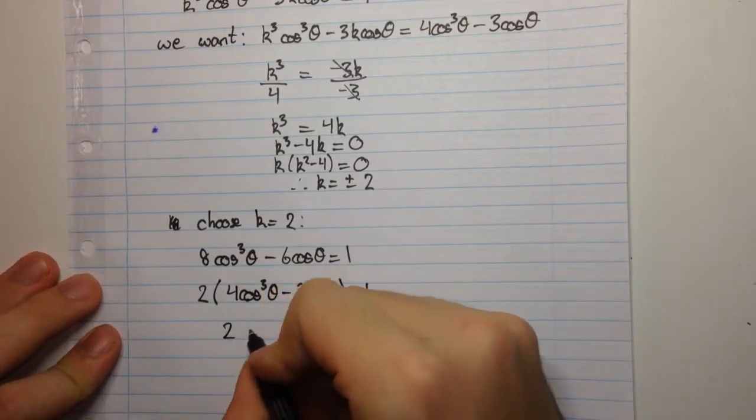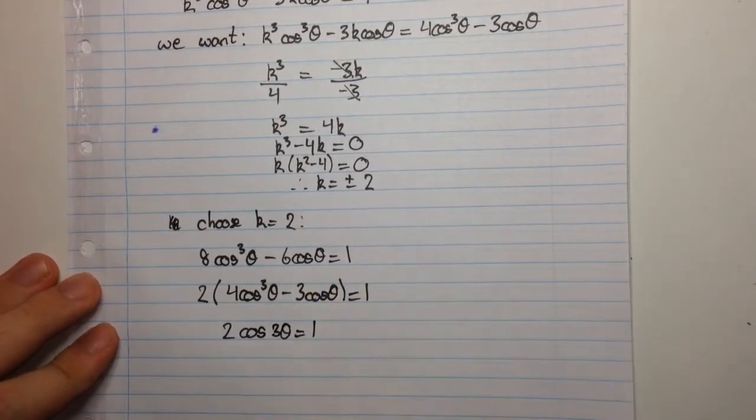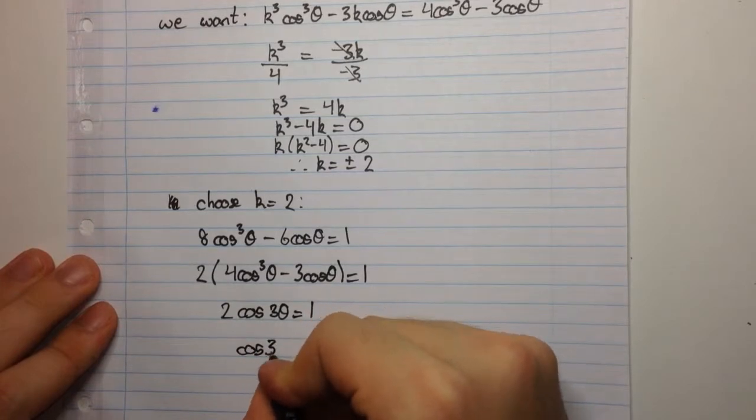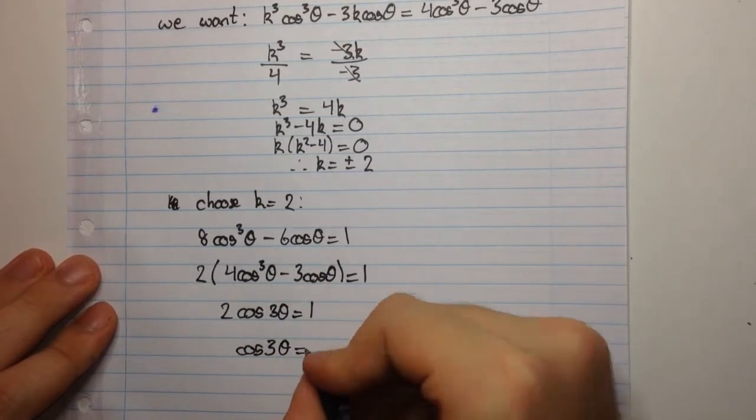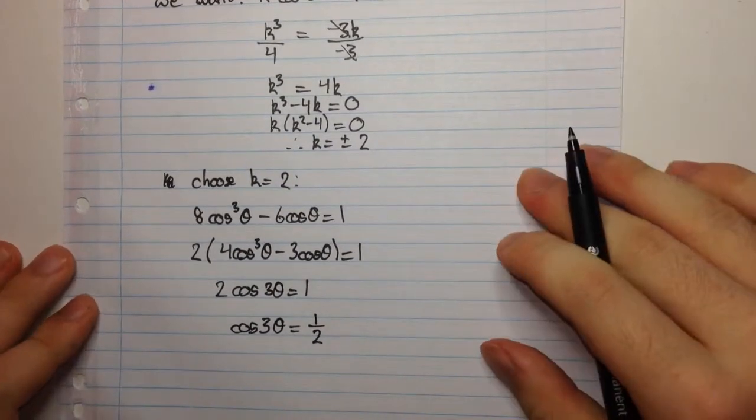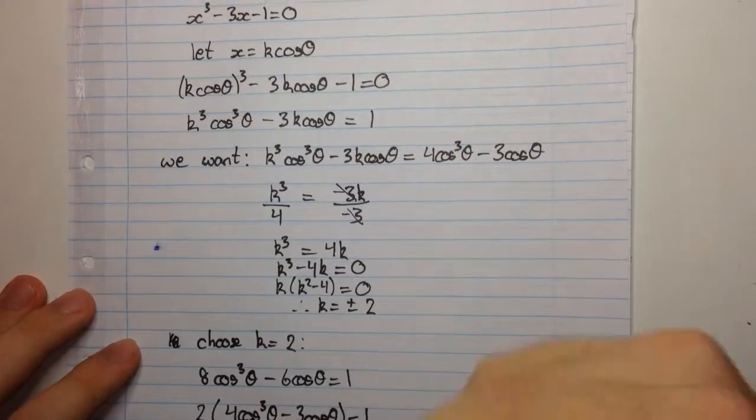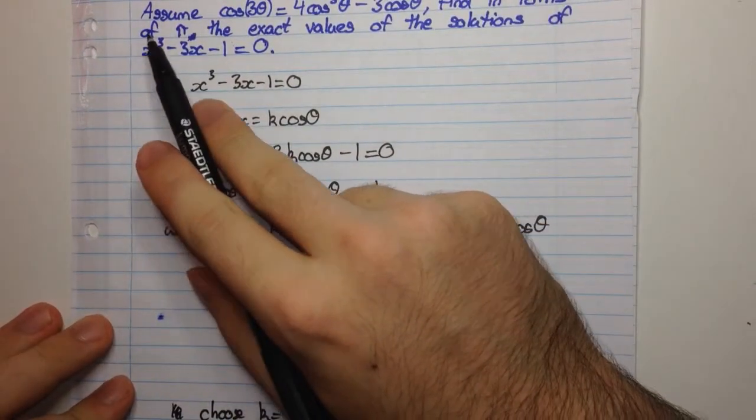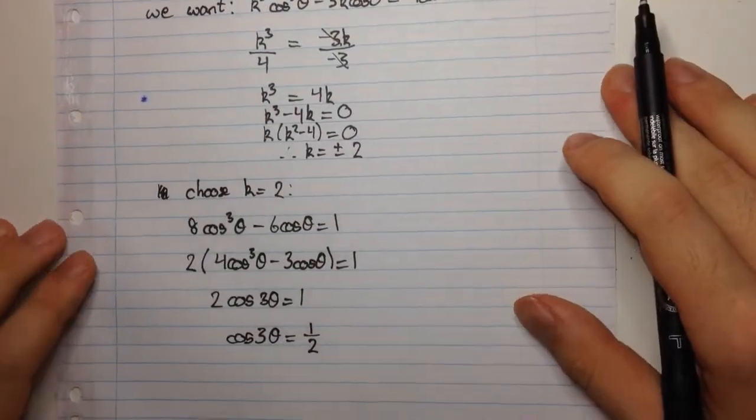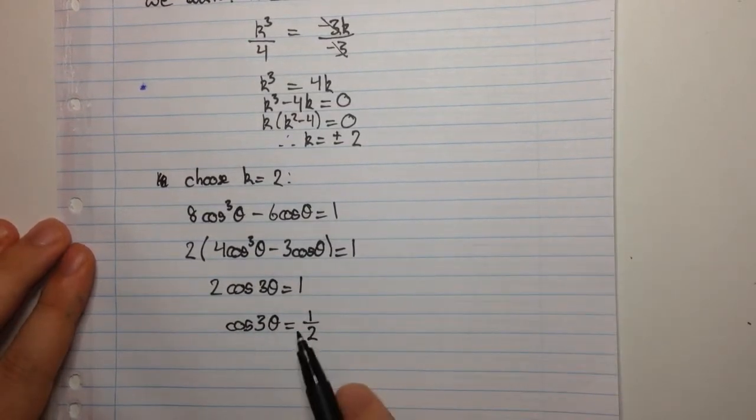So we're going to have 2, this was given to us as cos(3θ), is equal to 1. And now our problem becomes solving cos(3θ) equal to a half. Now we're going to need 3 solutions because, or 3 different solutions because this is a degree 3 polynomial. So we're trying to find 3 solutions now. So we're going to have to solve this.